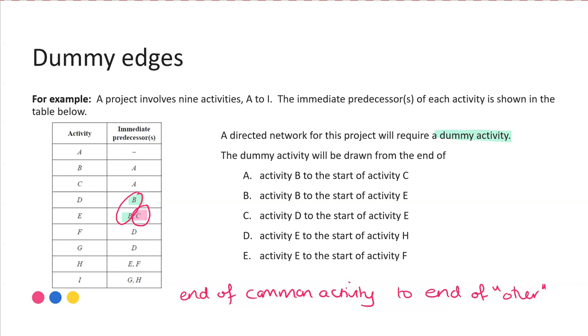Now that answer isn't necessarily in that format in our options here, but we can see we're going from the end of, so we know it has to be from the end of activity B. So we can eliminate option C, D and E. Then reading the rest of the options, it says the start of activity C or the start of activity E. Now we've said it has to be to the end of the other predecessor. So we need it to go to the end of C. So it can't be A. So why is the correct answer B? Well, if we look back at the precedence table, activity C is a predecessor for activity E. So that means it's going to the start of activity E. So the end of that common, sorry, the end of the other activity C is also the start of activity E. And therefore making B our best and most correct answer there.